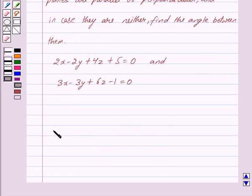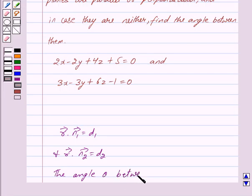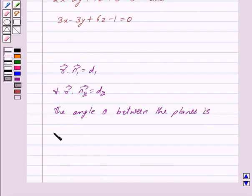Suppose there are two planes with equations vector r dot vector n1 equals d1 and vector r dot vector n2 equals d2. Now here vector n1 and vector n2 are normals to the plane. Then the angle theta between the planes is the angle between normal of the planes and it is given by cos theta equals mod of vector n1 dot vector n2 upon mod of vector n1 into mod of vector n2.